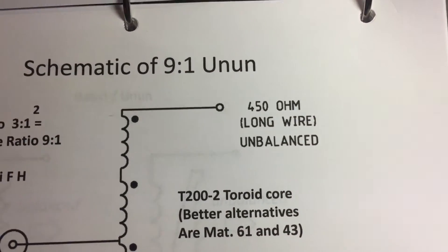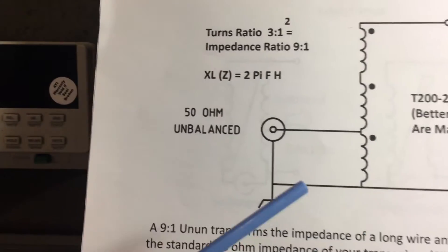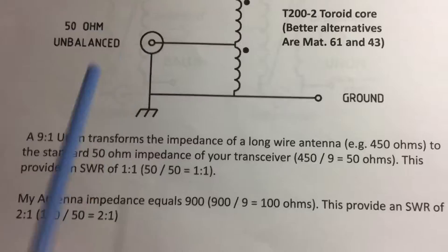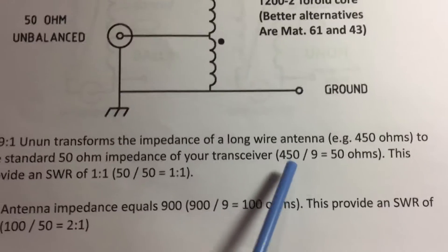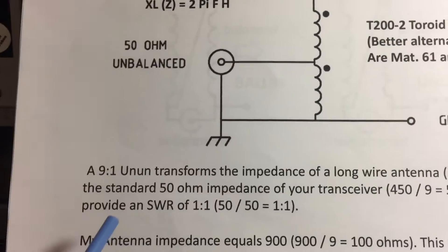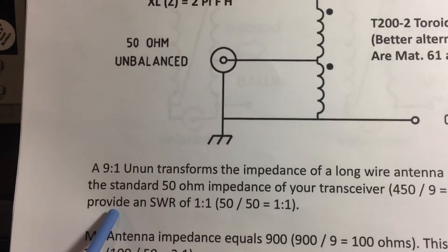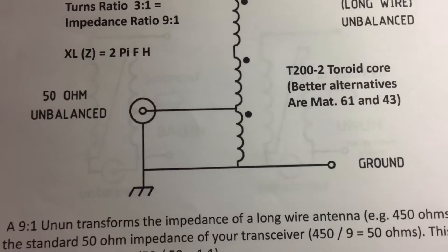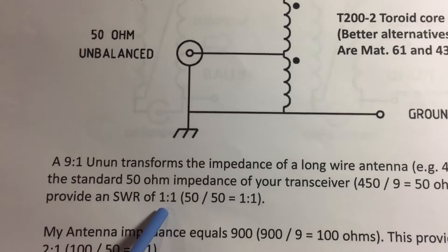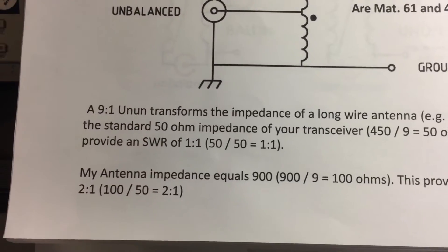So you can see the simple math here. We've got 450 ohms divided by 9 equals 50. And so we have 50 ohms being transformed into 50 ohms. So 50 divided by 50 is a 1 to 1 SWR.